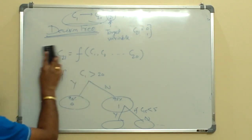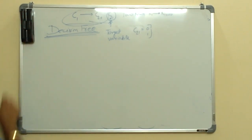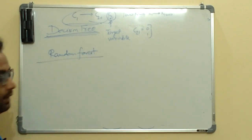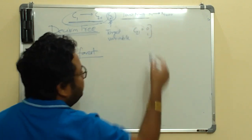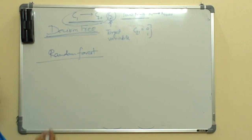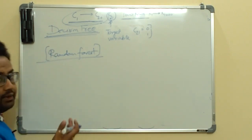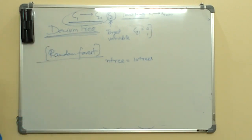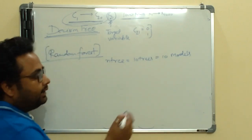So what happens in random forest? In random forest, we do randomization — both in the independent variables C1 through C20 and in the 1000 rows. This means we are not creating one model, but n number of decision trees. Let's say we create 10 trees — that means 10 models of decision trees.